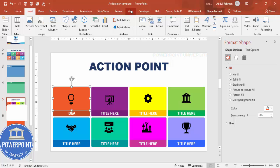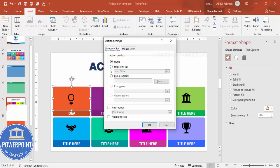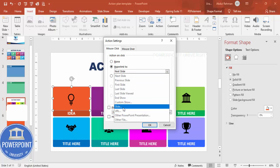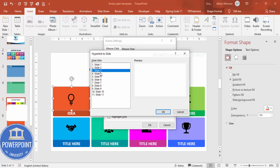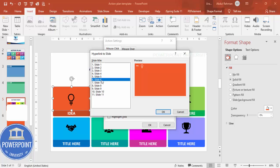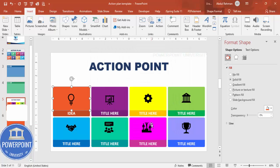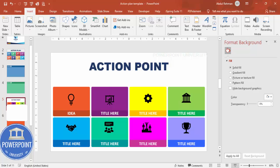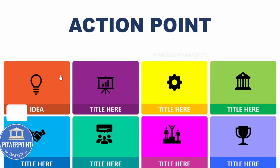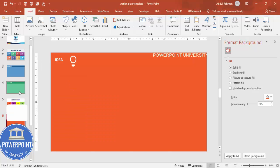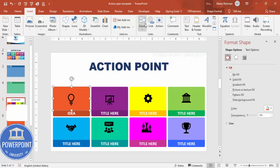To link the main slide options to their detail slides, select a shape, go to Insert > Action, choose Hyperlink, then select the target slide number and click OK. During the slideshow, hovering over the shape and clicking will jump to that detail slide. You can use either this Action/Hyperlink method or the Zoom feature — it's up to you.